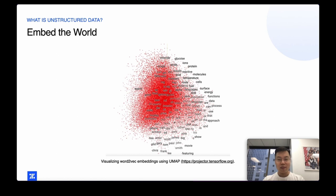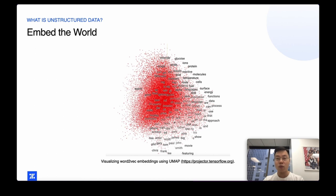This is a visualization I did a while ago with TensorFlow Projector of various words — word embeddings projected into a three-dimensional space. At the very top, you can see more scientific words: chloride, glucose, ions, proteins. At the bottom, you see a lot of names — Phil, Gary, Tom, Chris, Frank. On the right, you see a lot of functions and processes. Taking these very high-dimensional embeddings and projecting them into 3D space shows how they are powerful ways to represent data that would otherwise be difficult for a computer to understand.